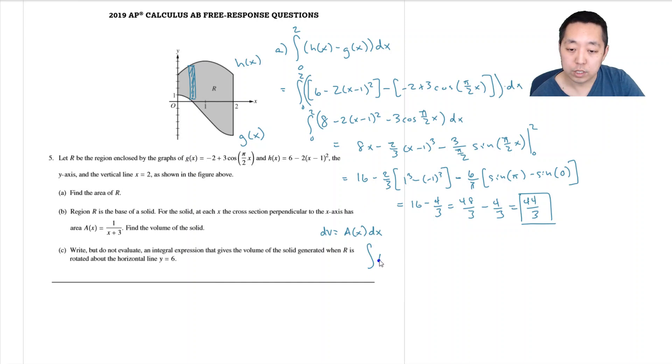So the total volume is just the integral of a of x dx from 0 to 2. Because this is the volume of 1. So then I'm going to integrate from 0 to 2, 1 over x plus 3 dx.